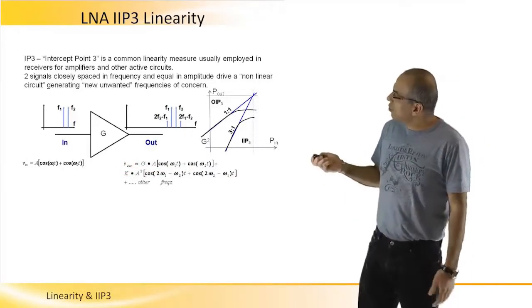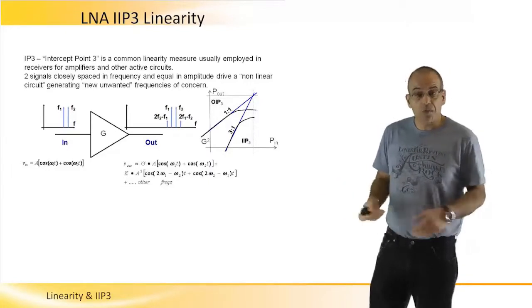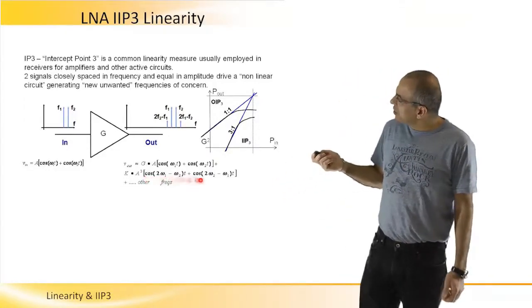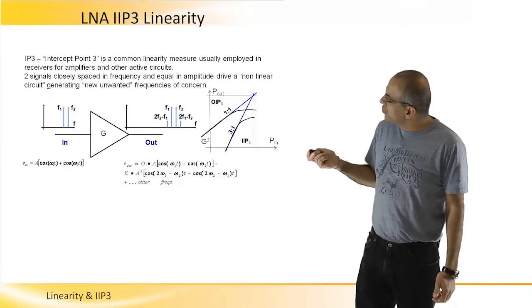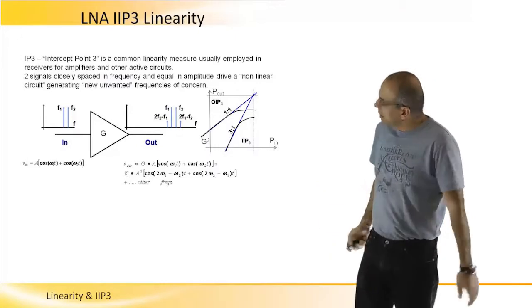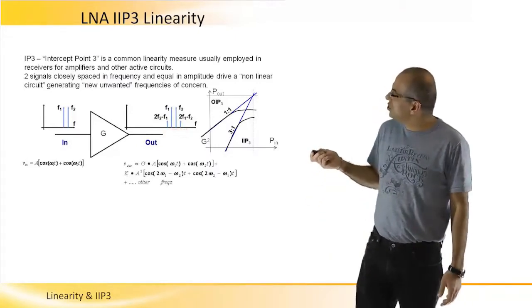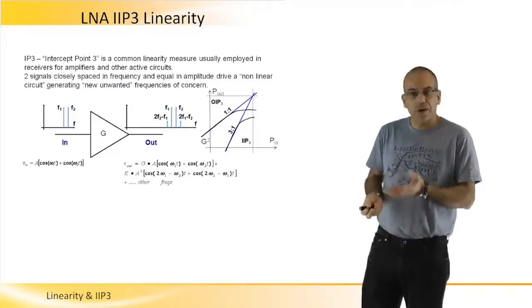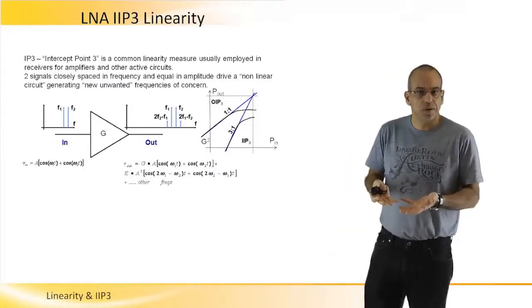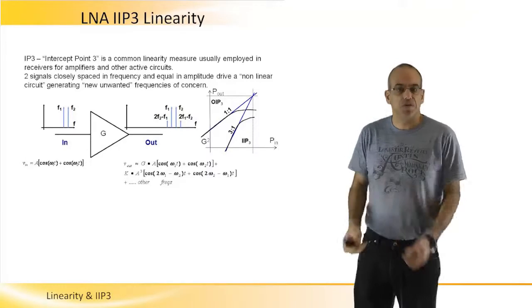However, we will find more harmonic products. And the two harmonic products of interest are 2F2 minus F1 and 2F1 minus F2, which are very close to the original product and therefore can be spurious signals that will degrade the receiver performance.